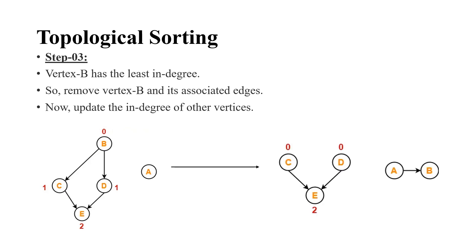So, if we remove B, we have C, D, E. Its updated indegrees are given. So, for C and D, the indegree is 0 and for E, it is 2.